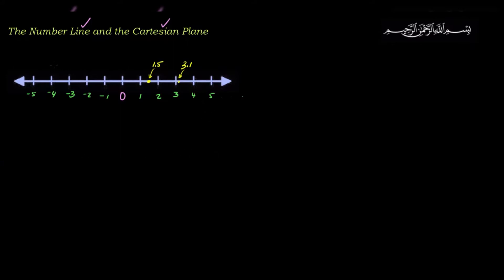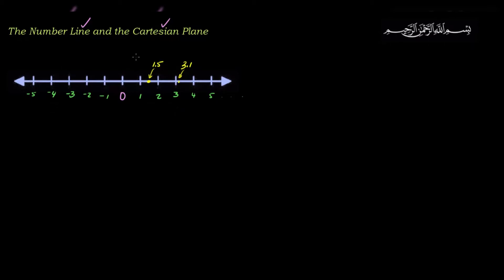On the right side of zero are all positive numbers, and on the left side of zero are all negative numbers. Now, you might wonder whether 0 is a positive or negative number. Well, 0 is neither positive nor negative — it doesn't belong to either side and does not have a sign itself.